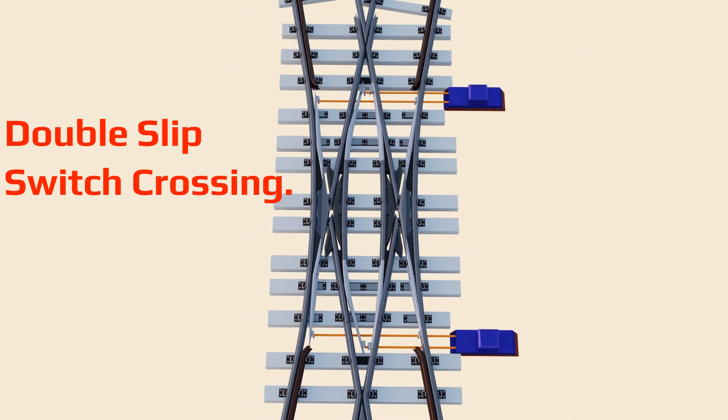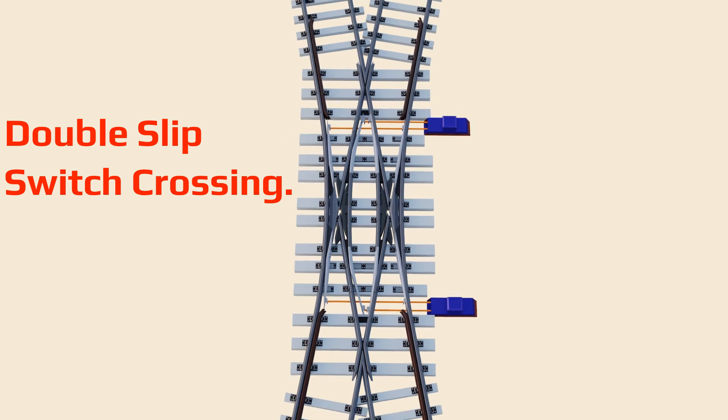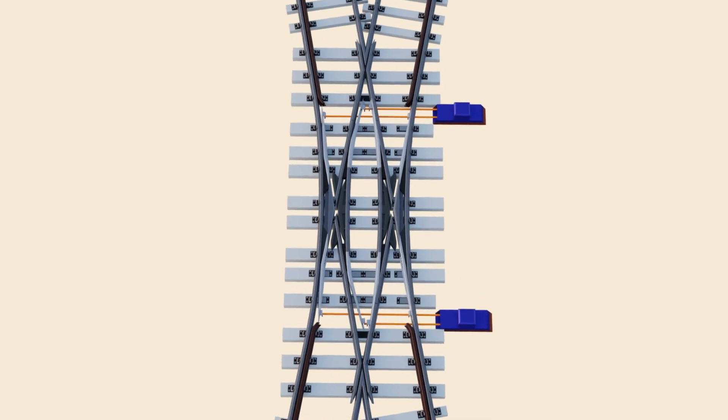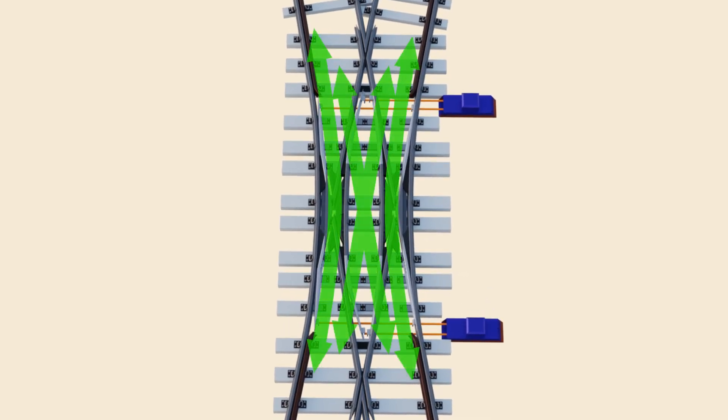This is a DSS crossing. Just like a single switch crossing, which was well explained in the last video, this crossing has track changing arrangement at both sides. This crossing can guide a train to all directional rail tracks.